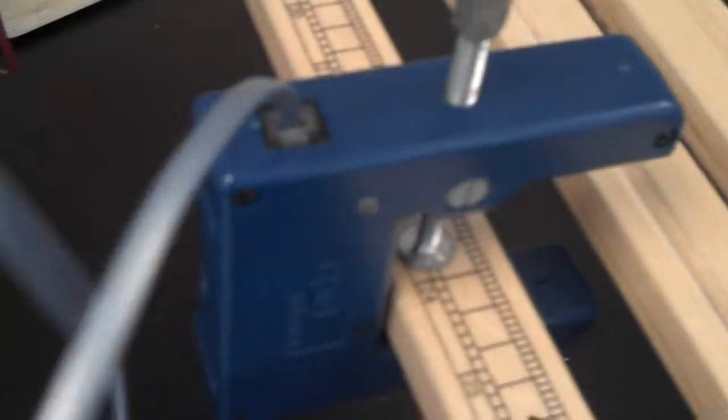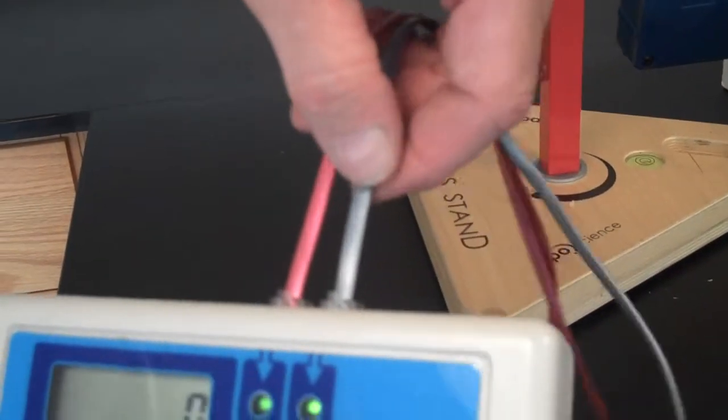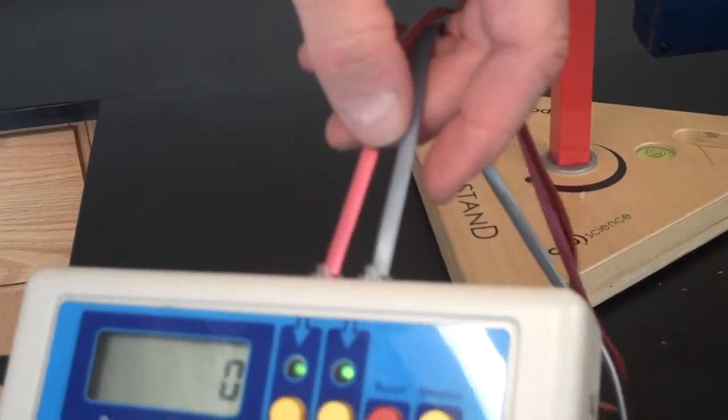Then you make sure that the other photo gate, which is photo gate B at the bottom of the ramp, is plugged into the B timer. Now some confusion can occur because some of our cords are not color coded, so you might have two gray cords or two red cords.